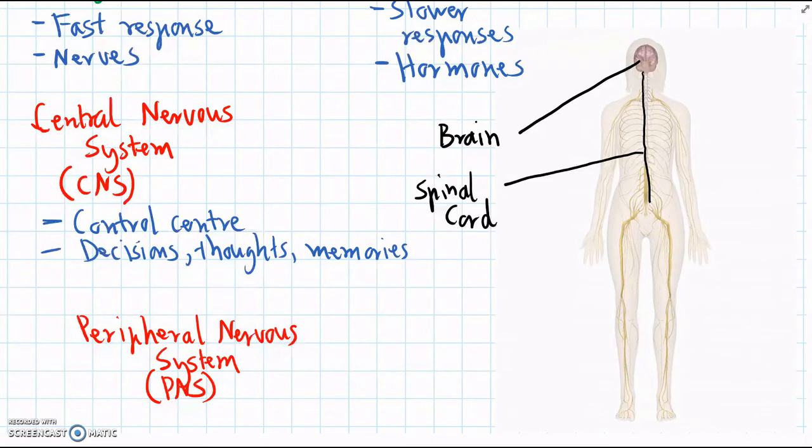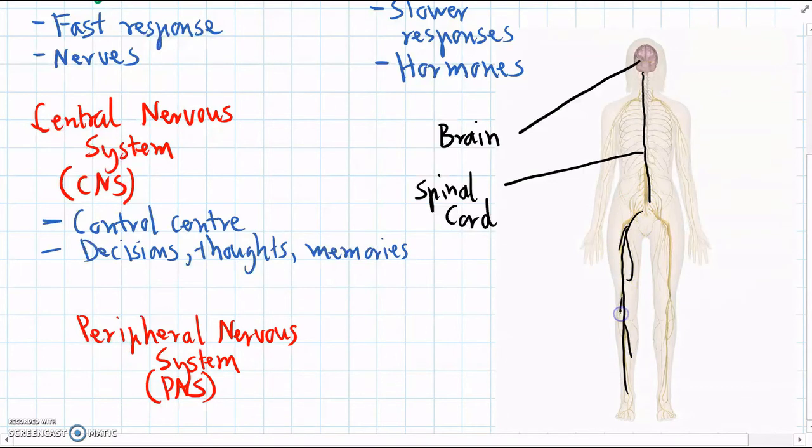The peripheral nervous system is any nerve that's not part of the central nervous system. So we have lots of nerves that run down through all our organs. We have nerves in our legs. You can see that they're branched, nerves running down into our arms. So all these nerves are part of the peripheral nervous system.